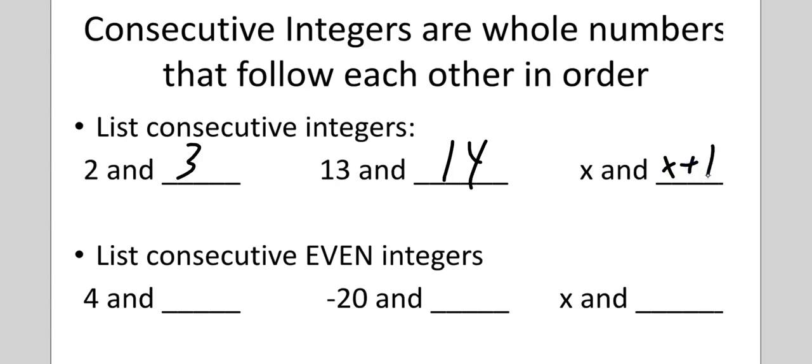Consecutive even integers. So the next even after four would be six. Negative 20 is a tricky one. It's negative 18, not negative 22. Because look what we're doing here. We're adding two. And if we add two, that gives us X plus two.